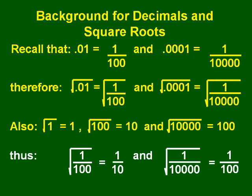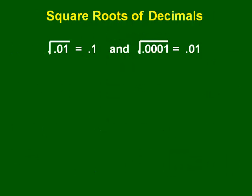Putting all this information together, the square root of 1 over 100 is 1 over 10, and the square root of 1 over 10,000 is 1 over 100. Converting back to decimal form, the square root of 0.01 is 1 tenth, or 0.1.